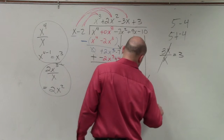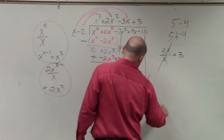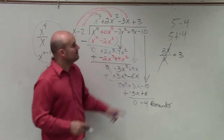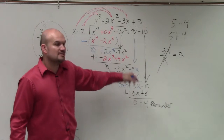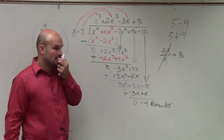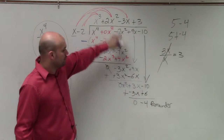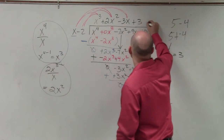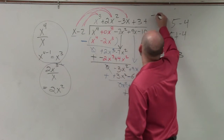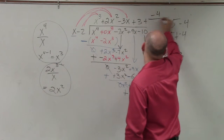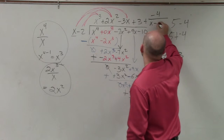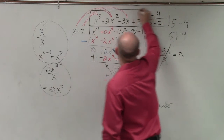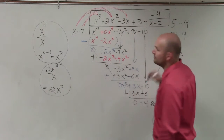When writing your answer, you always write your quotient plus your remainder over your divisor. That would be your final answer.